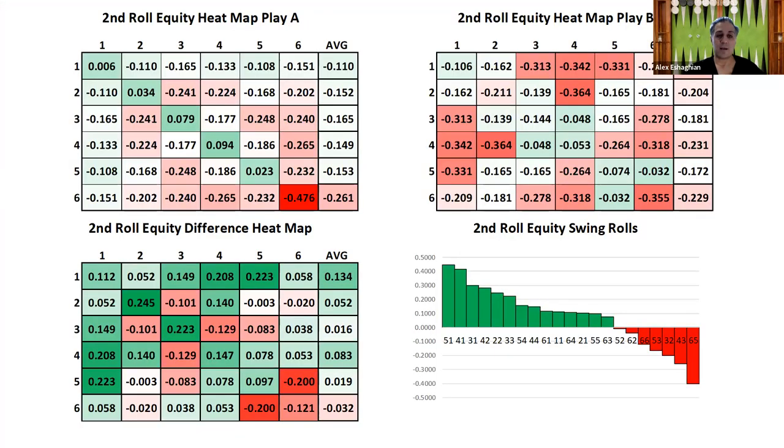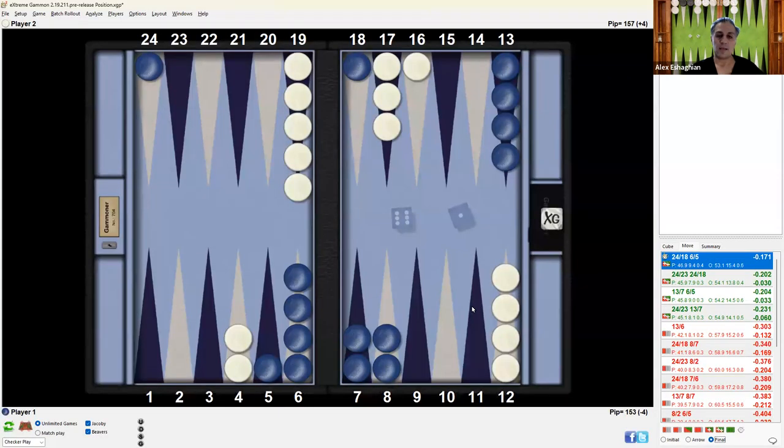And this is the second roll, equity heat maps. So this is how Blue's plays play on his next roll after White plays. After the top play on the upper left, after the natural play on the upper right, and the difference on the lower left in the histogram shows the difference here. So you can see all the 1s and the 2s and the 4s play better. So for example, 5-1, 4-1, 3-1. And if you look at this, with a 5-1, you can make that anchor. With a 4-1, you can escape. With other ones, you can make this point.